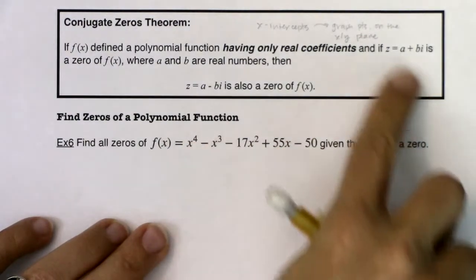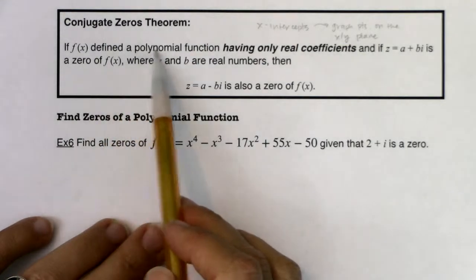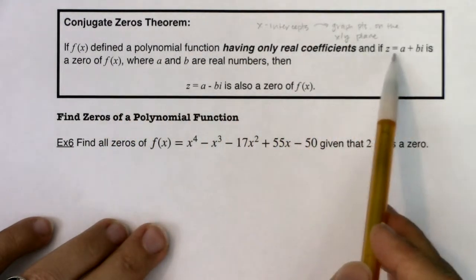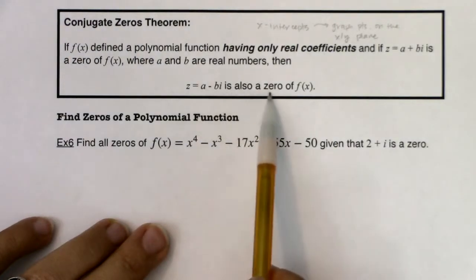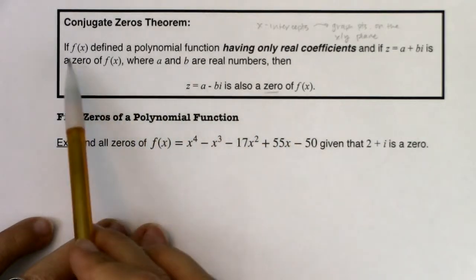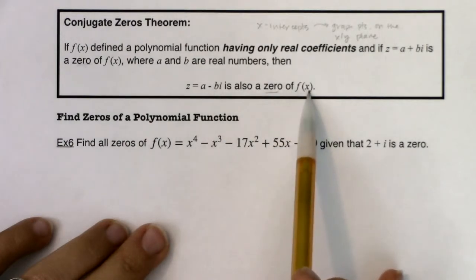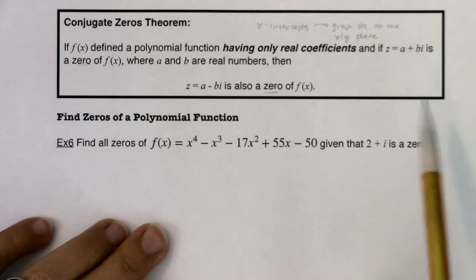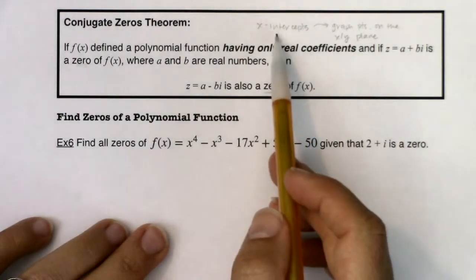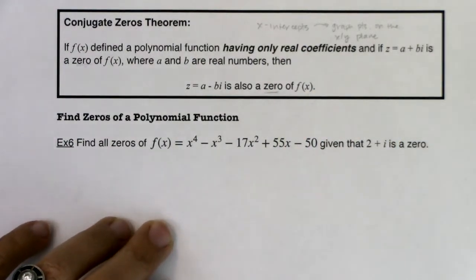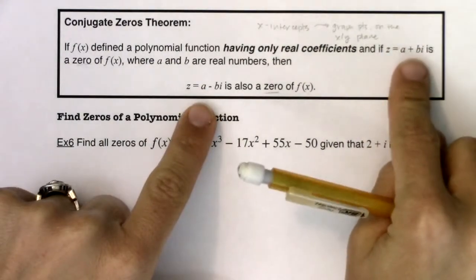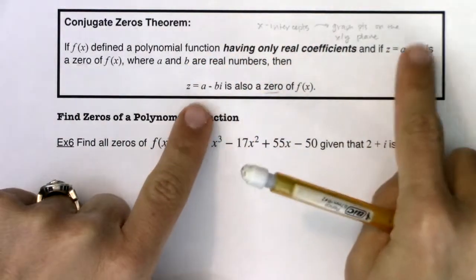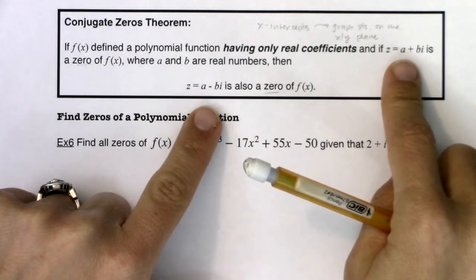So let me read the conjugate zeros theorem. If f of x is a polynomial function having only real coefficients, and if the complex number a plus bi is a zero of f of x, where a and b are real numbers, then its conjugate a minus bi is also a zero of the function. I'm using the phrase zero, meaning if I plug a plus bi or a minus bi into my function, I do get zero back out. So zeros for polynomials come in conjugate pairs: if a plus bi is a zero, then automatically a minus bi is a zero.